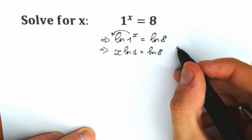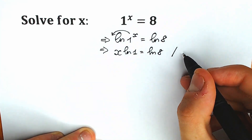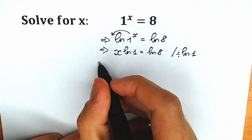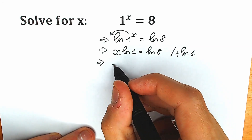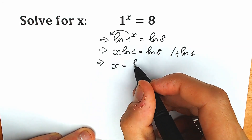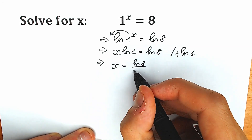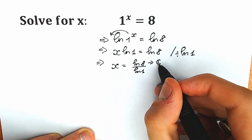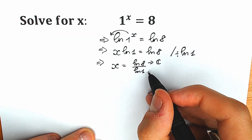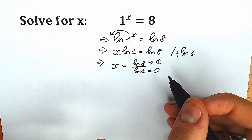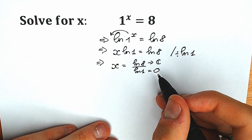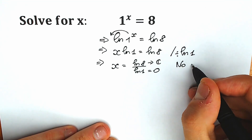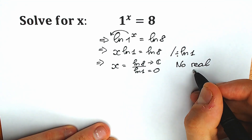The last move is to divide both sides by natural log 1. When we divide, we have x equal to natural log 8 over natural log 1. Natural log 8 is a fine constant, but natural log 1 equals zero. In basic math and school algebra, we can't divide by zero, so as a result we can say that there are no real roots.